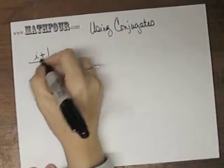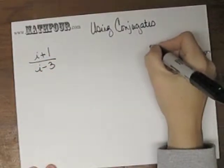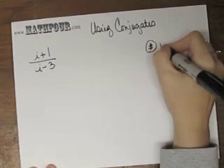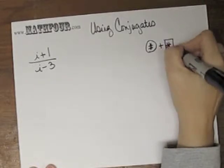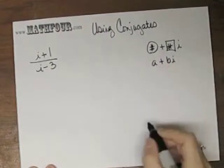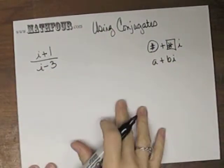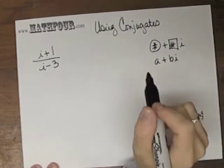All right, we're going to use conjugates to get this guy into the right shape, which is some number plus some other number i. And in fancy math terms, a plus bi. So we want this to look like this, because this is not really in its acceptable form. He needs to put some clothes on.